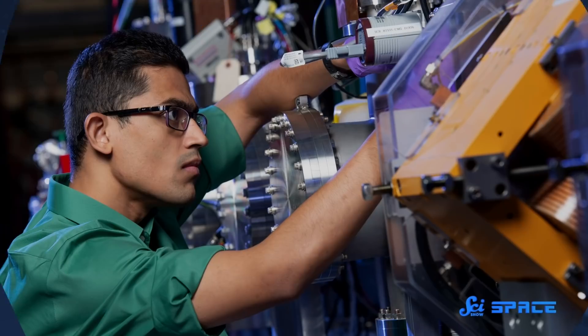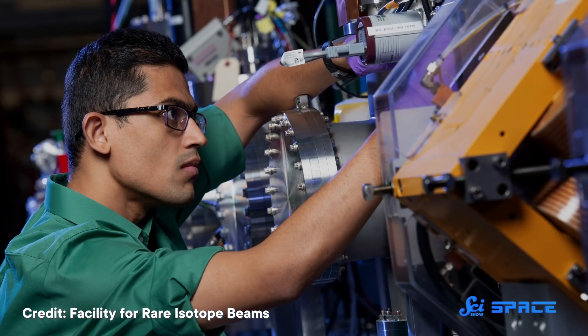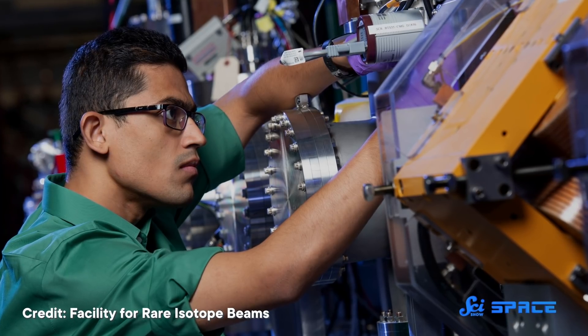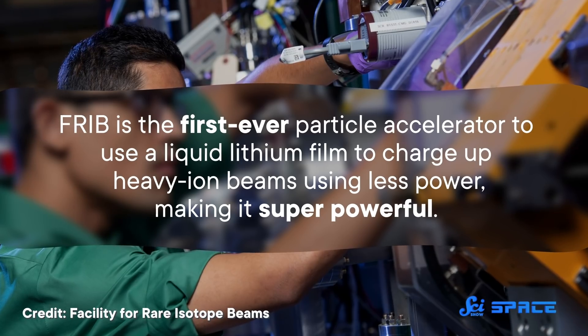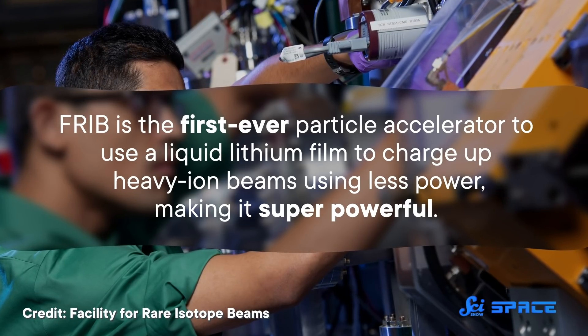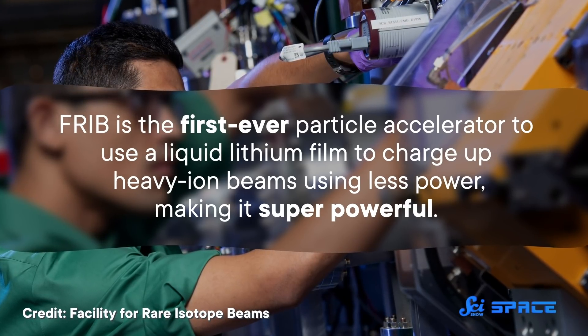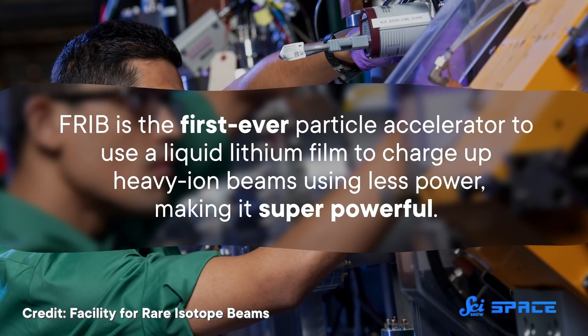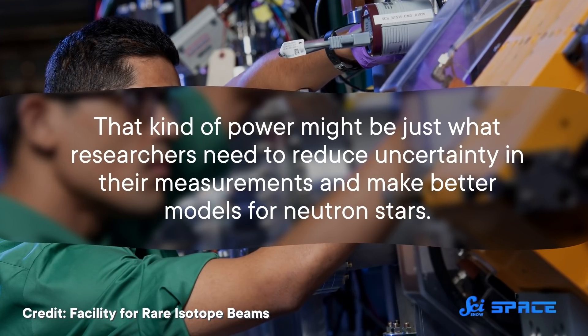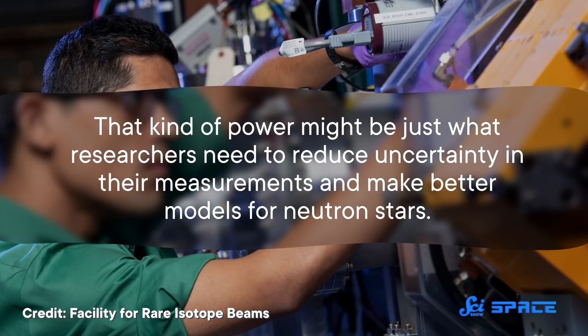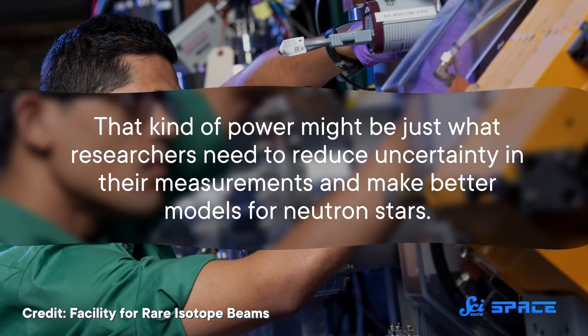And who knows? With new tools, researchers could find more data supporting this thicker skin idea. So the researchers who conducted this lead experiment planned to conduct follow-up experiments using the EFRIB particle accelerator. EFRIB is the first-ever particle accelerator to use a liquid lithium film to charge up heavy ion beams using less power, making it super powerful. That kind of power might just be what the researchers need to reduce uncertainty in their measurements and make better models for neutron stars.